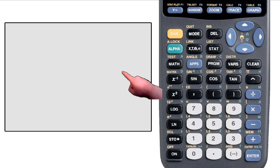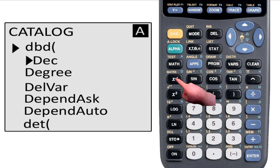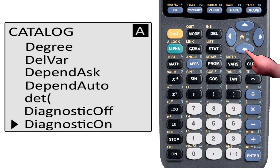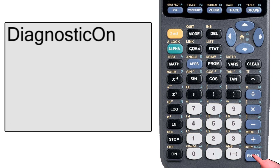Before we do anything, we're going to need to turn Diagnostic Mode on. This isn't in the Mode menu, though. You need to go to the Catalog, hit D to get to the Ds in the list, then scroll down to Diagnostic On. Hit Enter to put it on the home screen, and then hit Enter again to activate it.